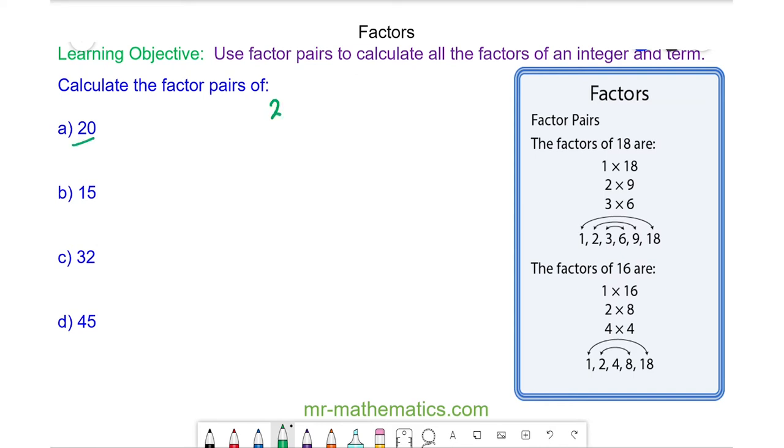The factors of 20 we can work out by considering the numbers that multiply to make it. The lowest number is 1 and it is 1 times 20. We're going to work out every pair. We know 20 is even so 2 will go into it 10 times. And because 5 is a factor of 10 we know 5 will go into it 4 times. And because there are no numbers between the 4 and the 5 we know we have covered all the factors of 20.